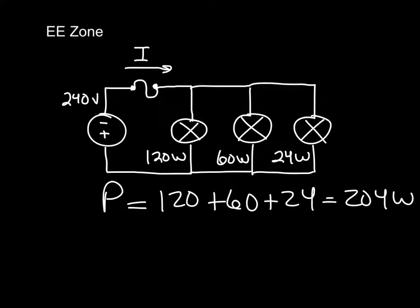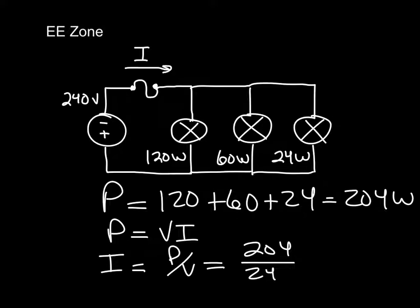To find the current I, we need to remember that P equals VI, so power is voltage times current. This means that the current is power divided by voltage. And for this problem, we have 204 divided by 240, or 0.85 amps.